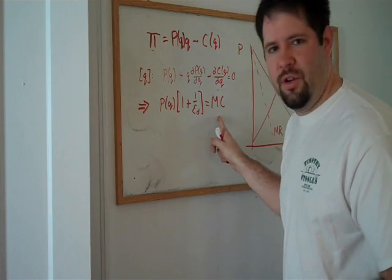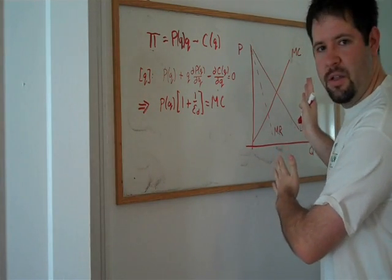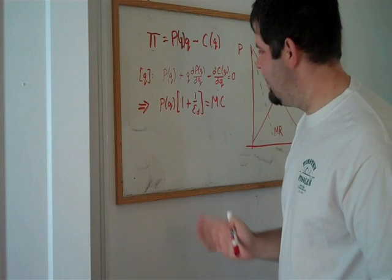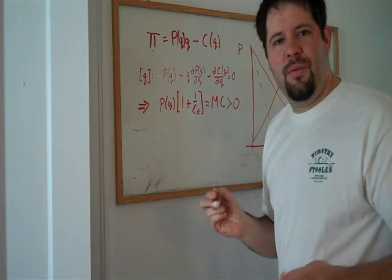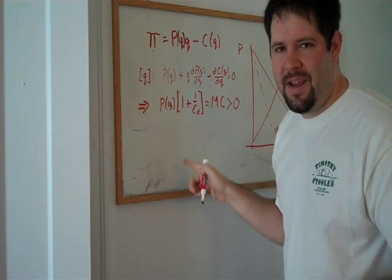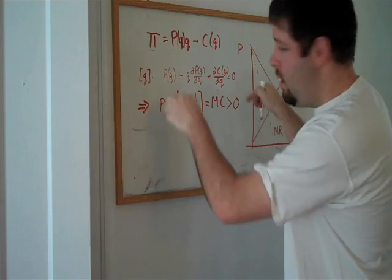Now, first things first, we know that our marginal cost, if we just look over here on this graph, our marginal cost is going to be bigger than zero. So that's bigger than zero. That means the left hand side is bigger than zero.